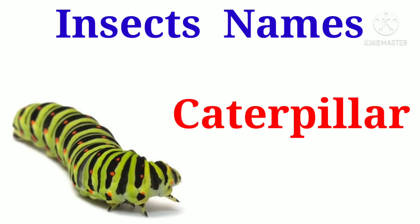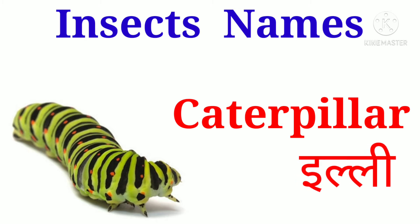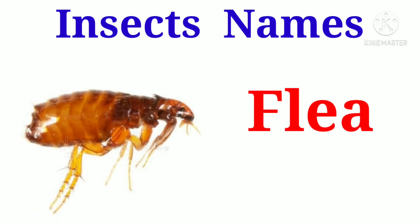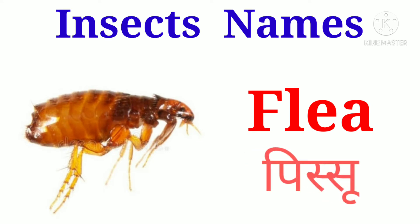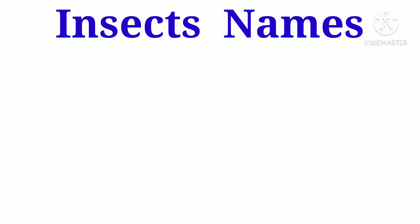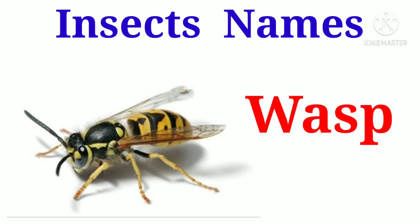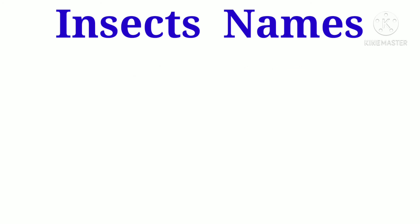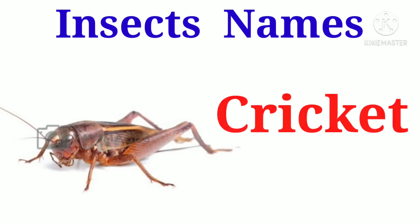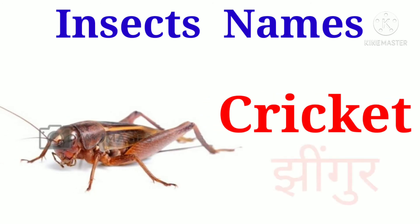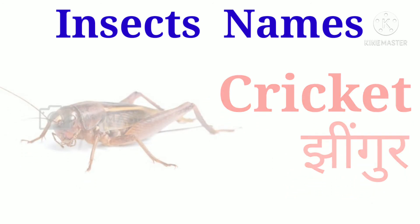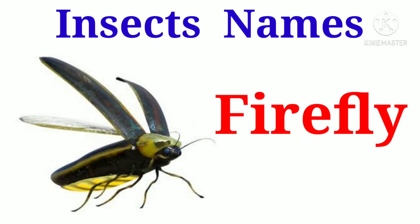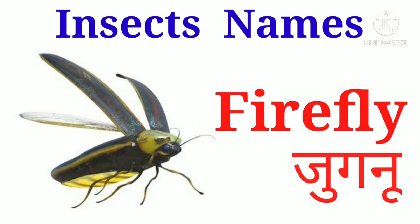Caterpillar. Caterpillar ko Hindi me hum ee li kehte hain. Flea. Flea ko Hindi me hum pissu kehte hain. Wasp. Wasp ko Hindi me hum tatiya kehte hain. Cricket. Cricket ko Hindi me hum jinggur kehte hain.